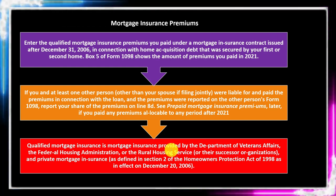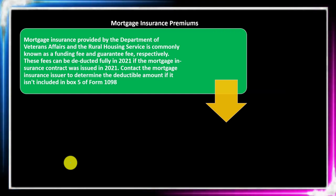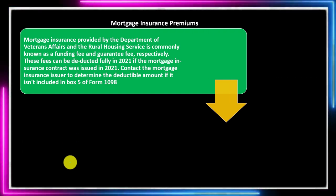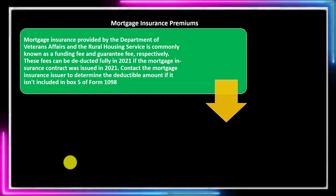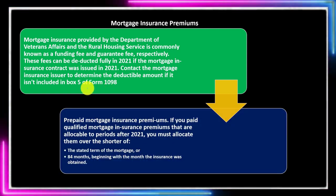Private mortgage insurance helps reduce the amount of risk on the lender's side. Mortgage insurance provided by the Department of Veterans Affairs and the Rural Housing Service is commonly known as funding fee and guarantee fee respectively — terms you may hear that are essentially interchangeable. These fees can be deducted fully in 2021 if the mortgage insurance contract was issued in 2021. Contact the mortgage insurance issuer to determine the deductible amount if it isn't included in box 5 of Form 1098.